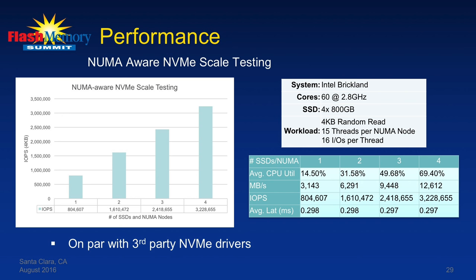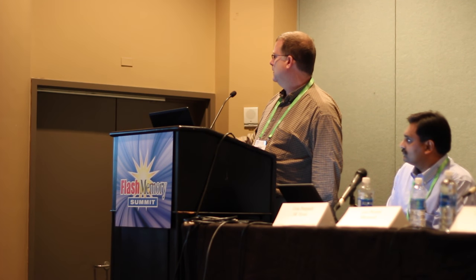The inbox driver is actually fairly performant. With one, two, three, or four devices, IOPS scale well. If the application is NVMe-aware and the storage stack is NVMe-aware, we get very good linear scaling across one, two, three, and four devices. This was done on an Intel Brickman system with 60 cores. Average CPU utilization, megabytes per second, IOPS, and average latency all scale linearly and remain pretty flat — overall good scaling.